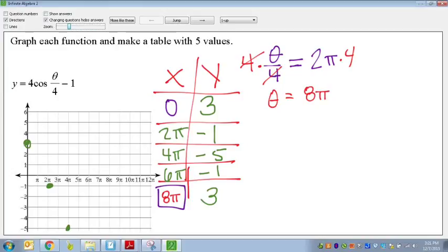So, if we graph it, 0, 3. At 2 pi, it's at negative 1. At 4 pi, it's at negative 5. At 6 pi, it's at negative 1 again. And at 8 pi, it's back at 3. So, my graph would look something like this.